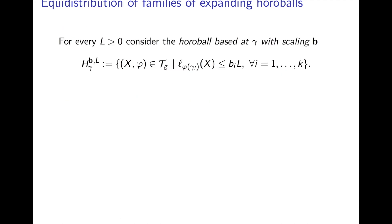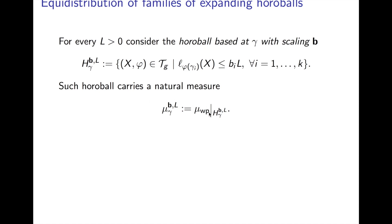Now let me say what horoballs look like in this new setting. For every parameter L, we consider a horoball based at gamma with scaling B, defined as the set of all marked hyperbolic structures on Teichmüller space satisfying the following constraint: for every component of the multi-curve gamma, the length of the unique geodesic representative of gamma_i on x — that's why the marking is important — is bounded by L times the scaling parameter. So what this means is: take gamma_i, map it using the marking to x, and look at the unique geodesic representative. These are what our horoballs are going to be.